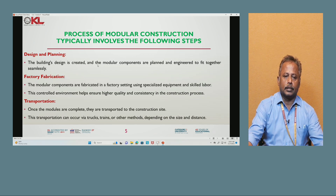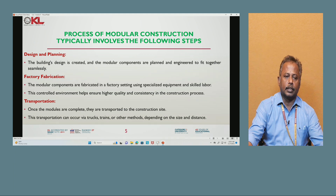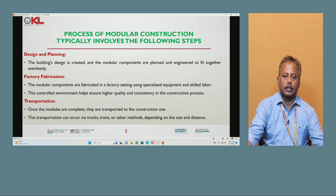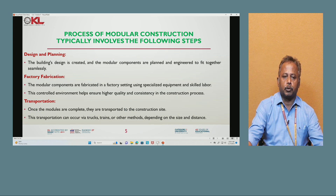The process of modular construction involves various steps. First is design and planning: the building design is created and the modular components are planned and engineered to fit together for assembly. Next is factory fabrication: modular components are fabricated in a factory setting using specialized equipment and skilled labor, ensuring high quality and consistency. Then transportation: once the modules are complete, they are transported to the construction site via trucks, trains, or other modes depending on size and distance.